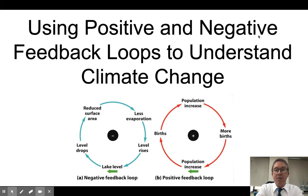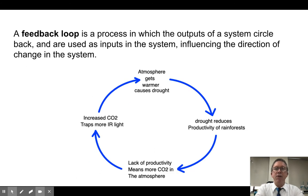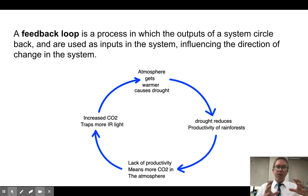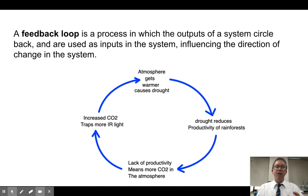In this screencast I'm going to talk about positive and negative feedback loops, which are pretty cool concepts, and how we can use them to understand global climate change. A feedback loop is basically a process in which the outcome of the process changes the inputs of the process, so it tends to influence itself in an ongoing way. We call that a feedback loop.